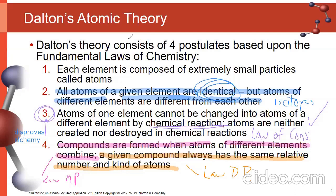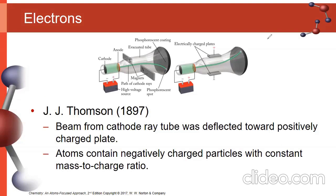That's Dalton's atomic theory — a really big step in the history of science and chemistry. When you think about how little had changed over the previous 2,000 years, this was a really important theory. The majority of its postulates are still valid, and even postulate two, though not valid exactly as written, remains valid if we massage the language to talk about the nucleus and the protons within it. Now we move into more modern aspects of atomic theory.